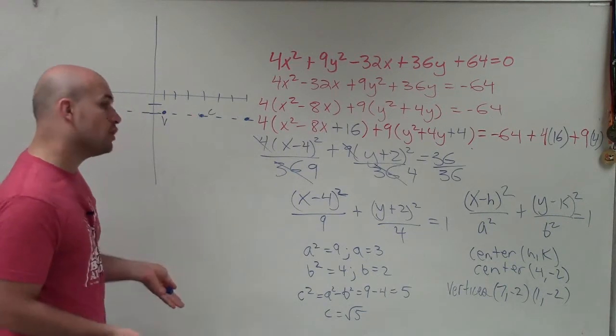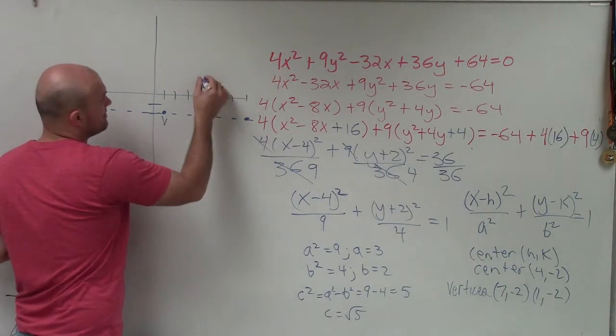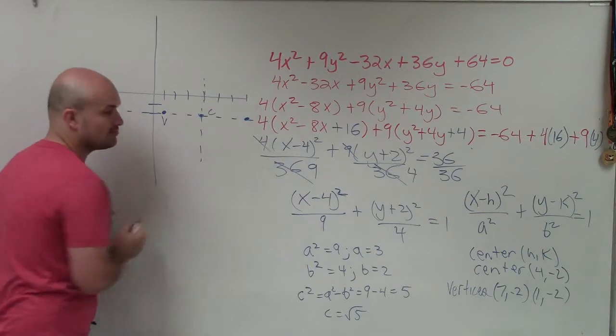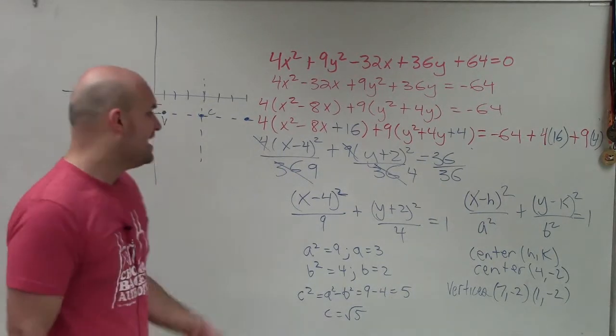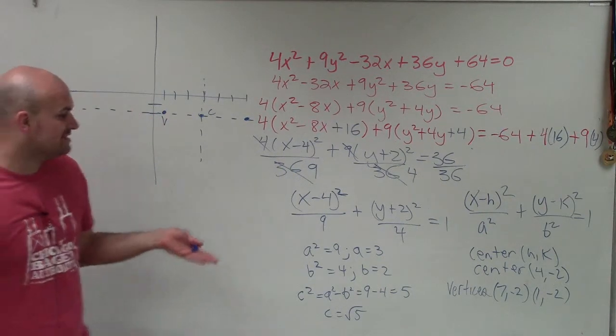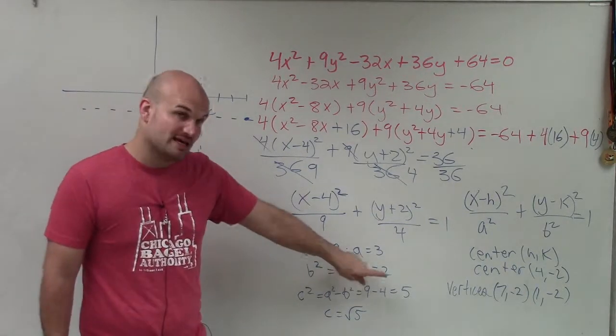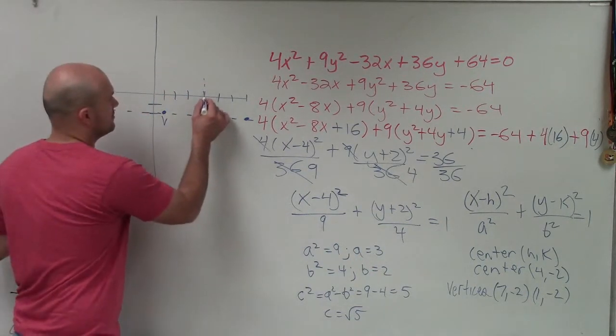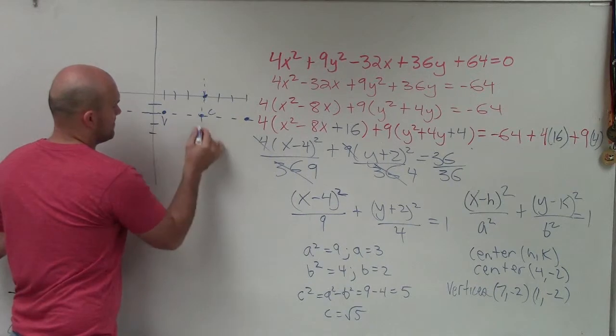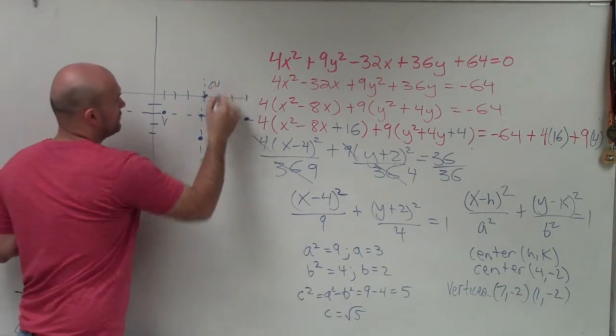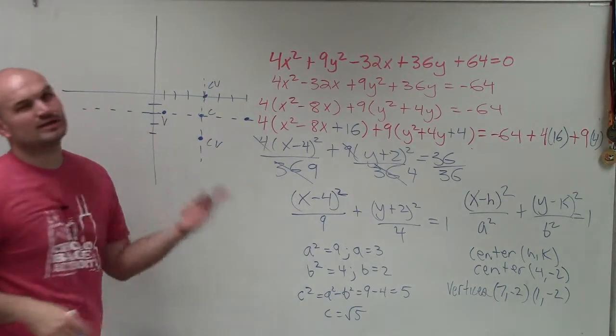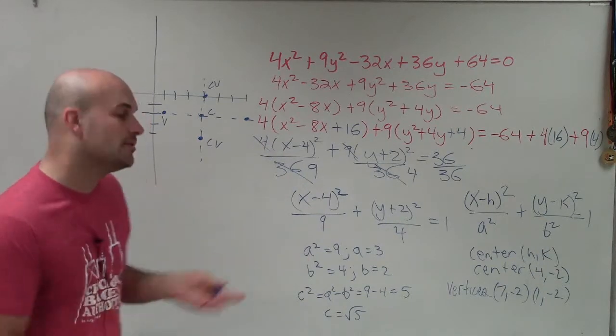Next, we can determine the co-vertices. The co-vertices are on our minor axis, which is perpendicular to the major axis. The distance from the center to your co-vertice is b. So I can go up 2, down 2, co-vertice, co-vertice. We don't really need to label the points, but we're going to use these to help us graph.